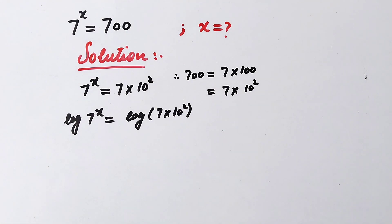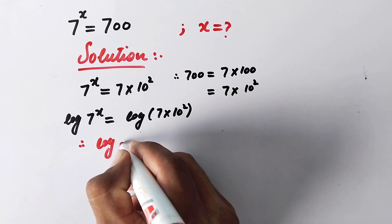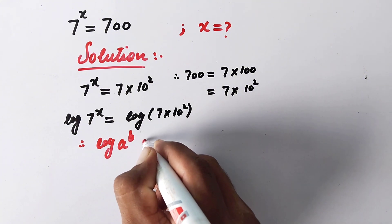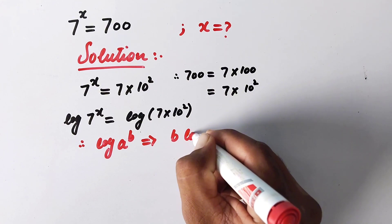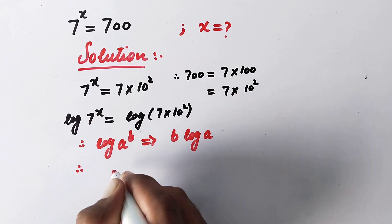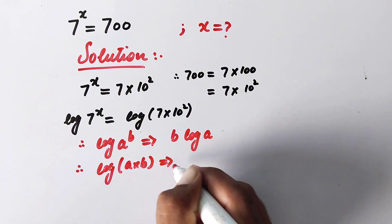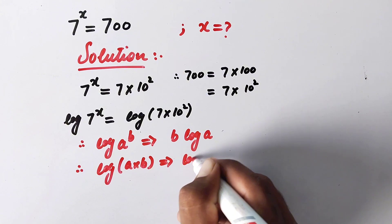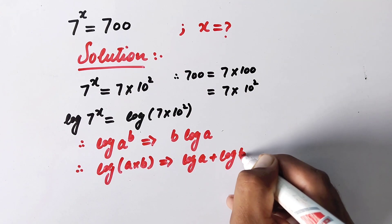And as we know that log a to power b can also be written as b times log a. The second rule is log of a multiplied by b can also be written as log a plus log b.